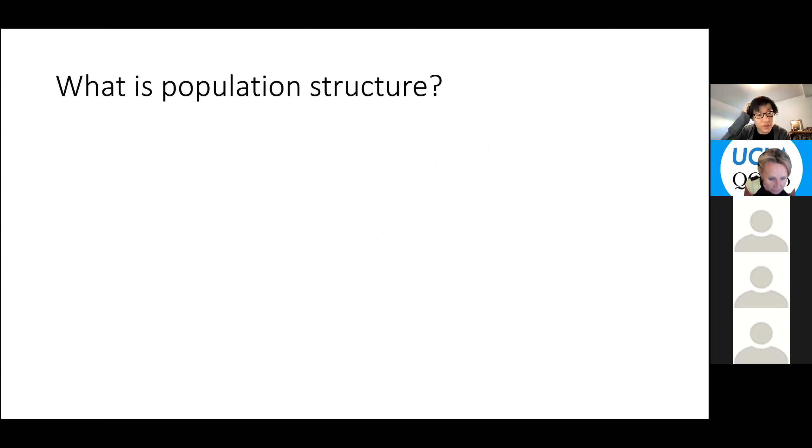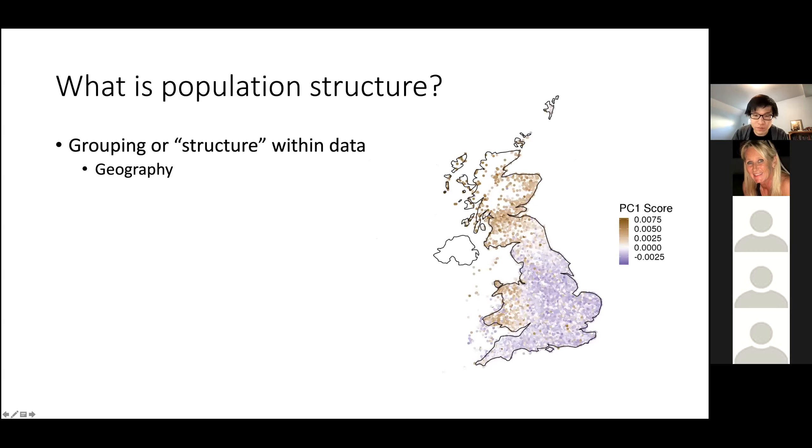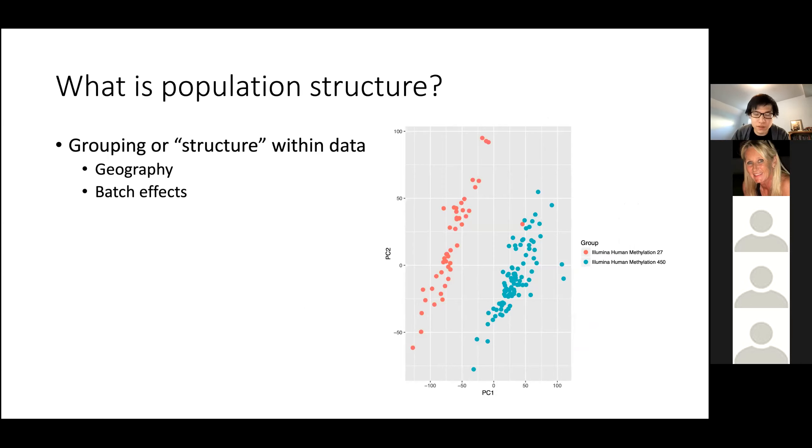Just to begin, I want to talk about what population structure is in the first place. Very broadly speaking, it's some sort of inherent grouping or structure within the data due to lots of different things. One example could be geography. In a previous study, we ran a simple PCA on the UK Biobank British individuals and found there was a north-south differentiation just from genetic data. It can also be due to batch effects, and another big one is ancestry, which is often the most prominent in genetic studies and the focus of this talk.